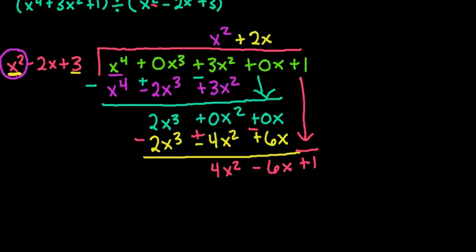And so then our next step is to figure out what would we multiply our x squared by to get 4x squared. So we would multiply this by 4, just a constant term. So 4 times x squared would give me 4x squared, 4 times negative 2 would give me negative 8x, and 4 times 3 would give me plus 12.